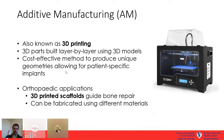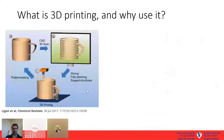You can design implantable devices in a patient-specific manner. For orthopedic applications, 3D printed scaffolds can guide bone repair and can be fabricated using polymers, ceramics, or metals. The most common current use of 3D printing in the surgical and orthopedic field right now is pre-surgical planning.